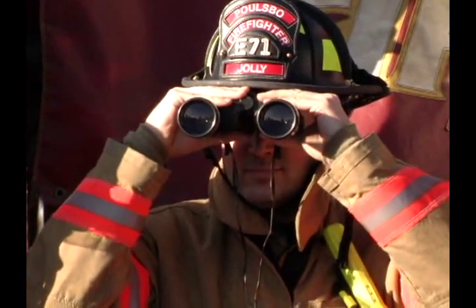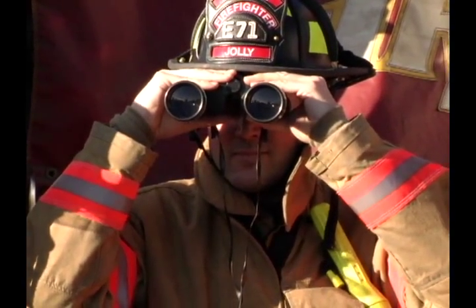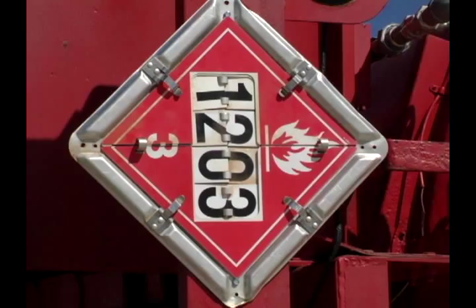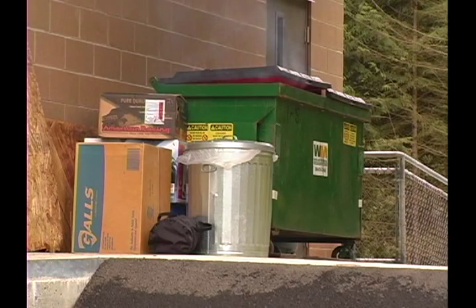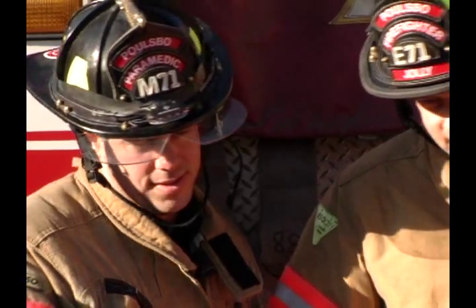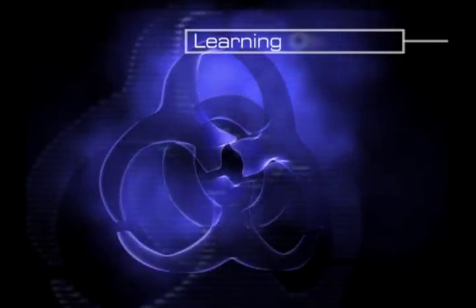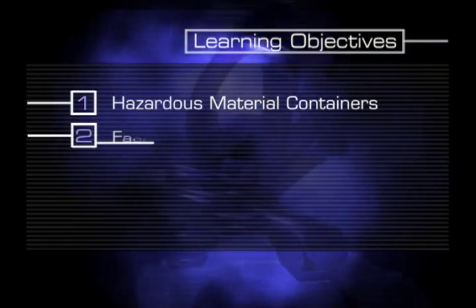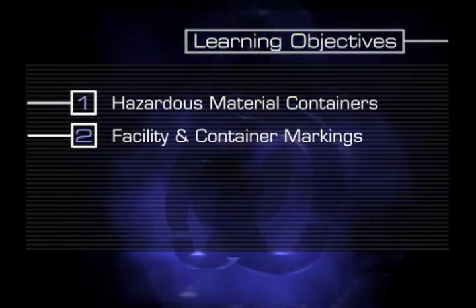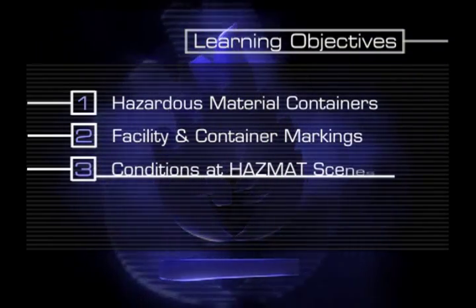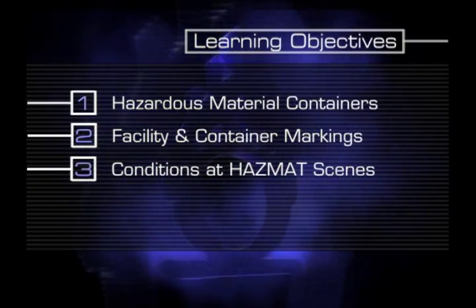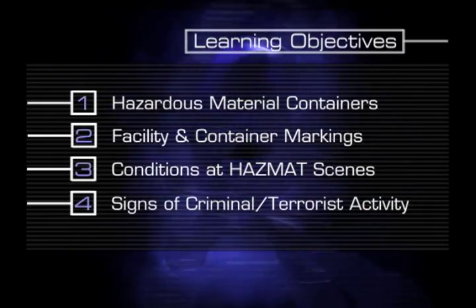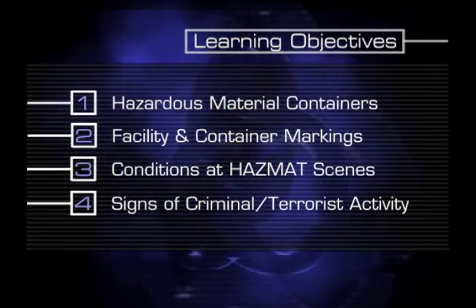The first steps you need to take when you arrive on scene are to identify container shapes, recognize container markings, and look for signs of criminal activity. Your learning objectives are: to understand the shapes and typical contents of hazardous material containers, interpret facility and transportation container markings, identify conditions surrounding HAZMAT scenes, and recognize the signs of criminal or terrorist activity.